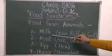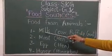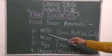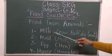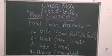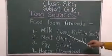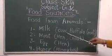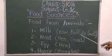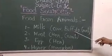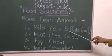First is milk, M-I-L-K milk. We get milk from cow, C-O-W cow; buffalo, B-U-F-F-A-L-O buffalo.